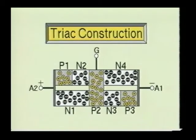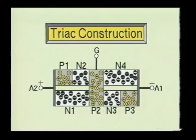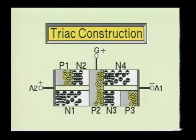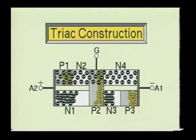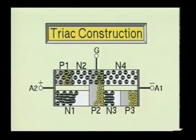With a positive voltage being applied at terminal A2 with respect to A1, and with a positive bias voltage applied at the gate, the PN junction between P2 and N4 will become forward biased. At the same time, the PN junction between P2 and N2 will become reverse biased. Therefore, the current flow through the N2 section will be due to minority charge carriers. The PN junction between N2 and P1 will then become forward biased and allow the current to flow from terminal A1 to A2. The current will continue to flow until the device drops below the holding current level.